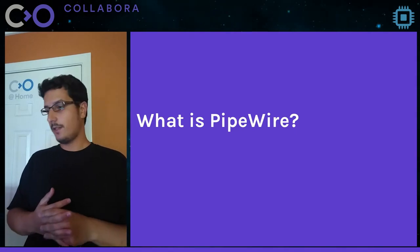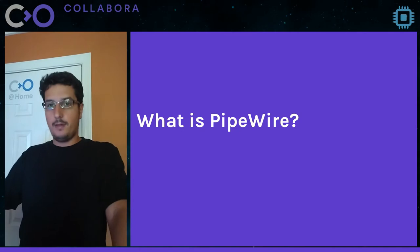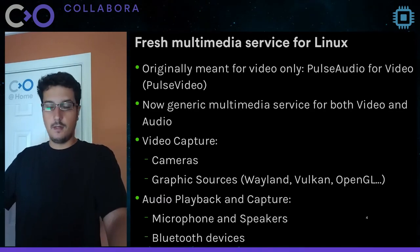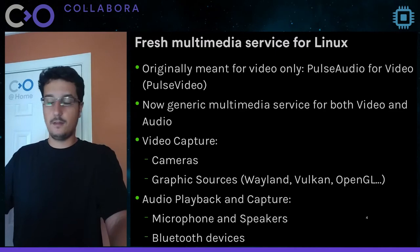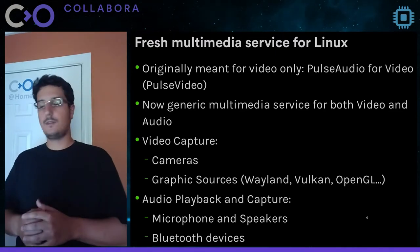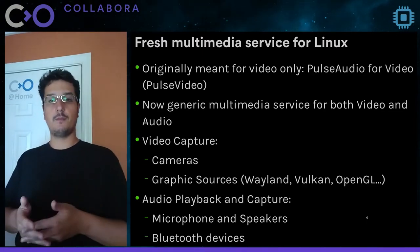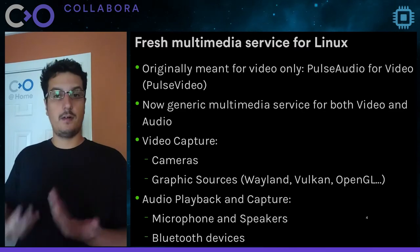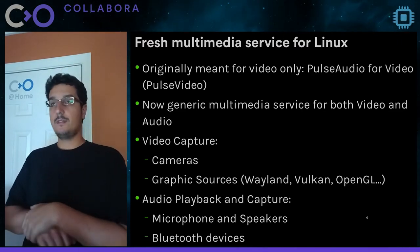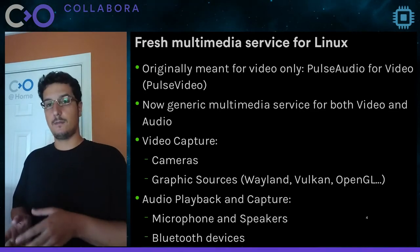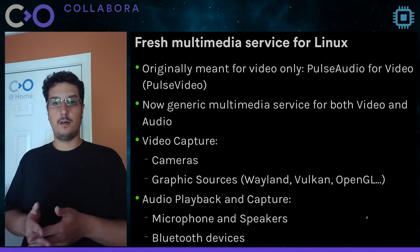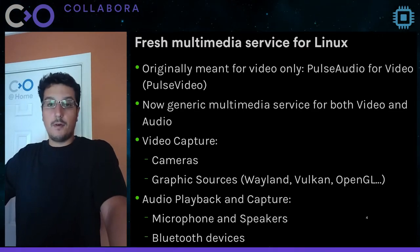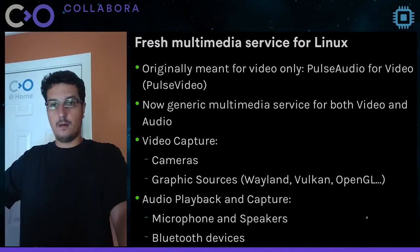What is this new technology that is emerging and gaining more and more popularity? PipeWire is essentially a fresh multimedia service for Linux that can handle any kind of multimedia devices — it doesn't matter if it's video or audio. It was originally meant to handle only video devices; in fact, its original name was Pulse Video. But over the years it evolved, was renamed to PipeWire, and is now a more generic multimedia framework that can handle both, because it started addressing many issues that previous audio services were having.